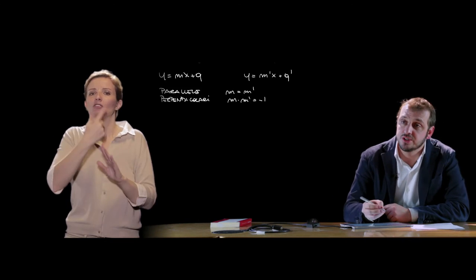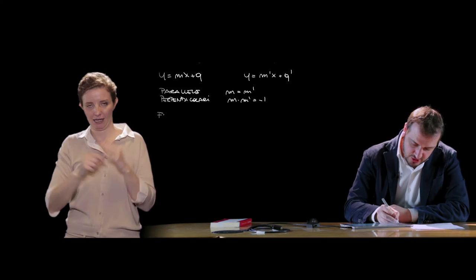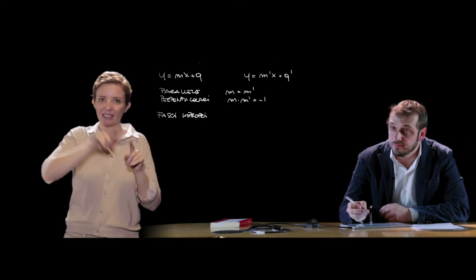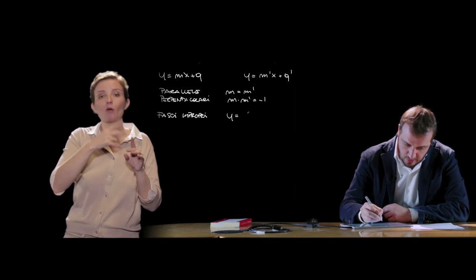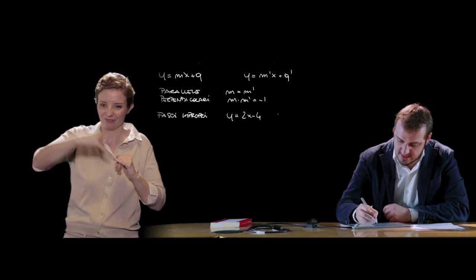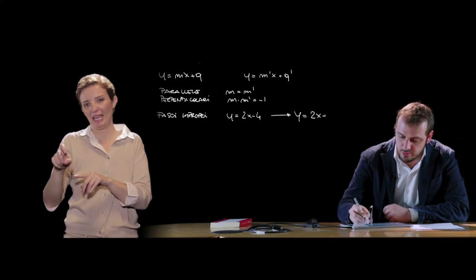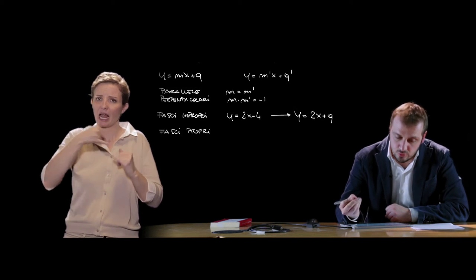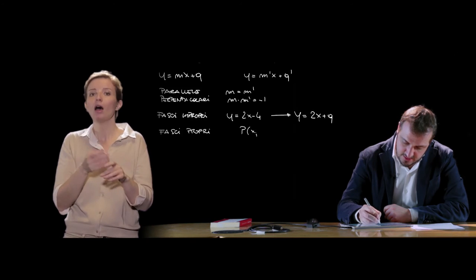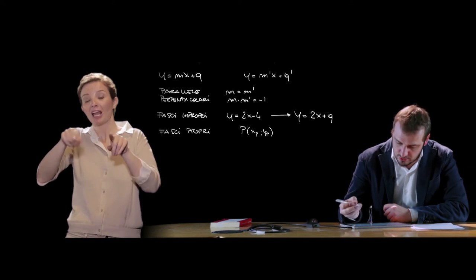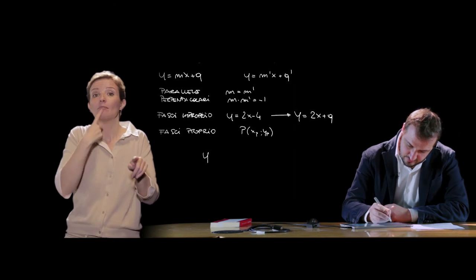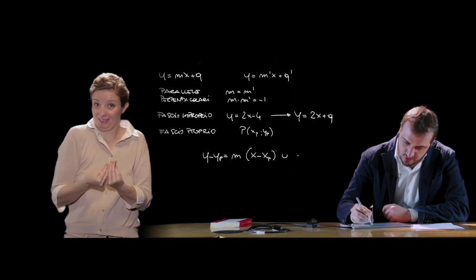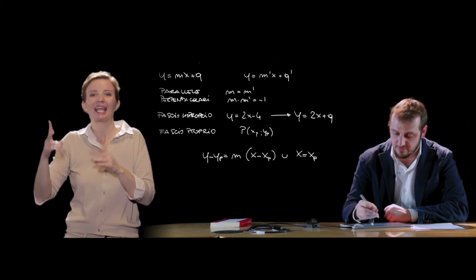Un altro aspetto importante riguarda i fasci di rette. I fasci impropri sono gli insiemi delle rette parallele tra di loro, ossia con lo stesso coefficiente angolare: ad esempio, il fascio cui appartiene y = 2x - 4 è y = 2x + q per un generico q. I fasci propri sono invece l'insieme delle rette passanti tutte per un punto P di coordinate (xP, yP), detto centro del fascio, con equazione y - yP = m(x - xP), unita alla retta x = xP.